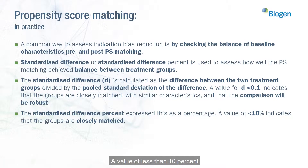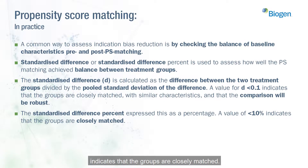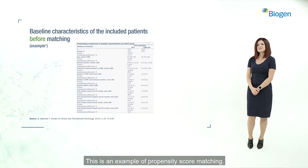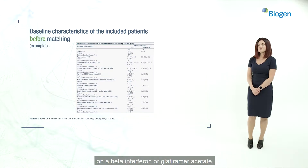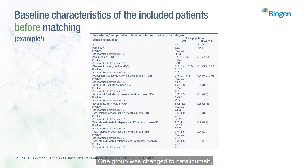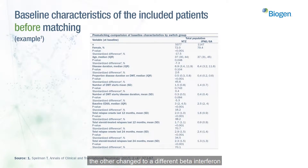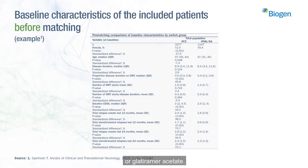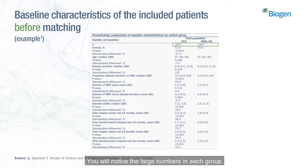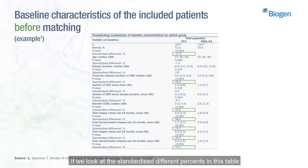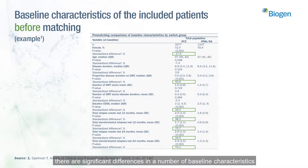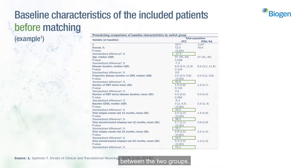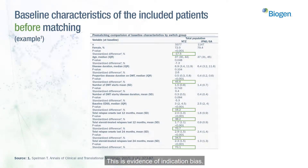This is an example of propensity score matching. This study investigated cases with relapsing-remitting MS on beta interferon or glatiramer acetate who had a clinical relapse. One group was changed to natalizumab, the other changed to a different beta interferon or glatiramer acetate. You will notice the large numbers in each group. If we look at the standardised difference percents in this table, there are significant differences in a number of baseline characteristics between the two groups — this is evidence of indication bias, and these groups should not be compared.